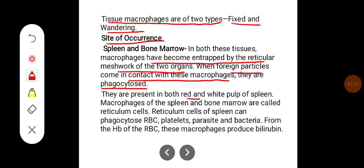They are present in both red and white pulp of the spleen. Macrophages of the spleen and bone marrow are called reticulum cells. Reticulum cells of spleen can phagocytose RBC, platelets, parasites and bacteria. From hemoglobin of the RBC, these macrophages produce bilirubin.